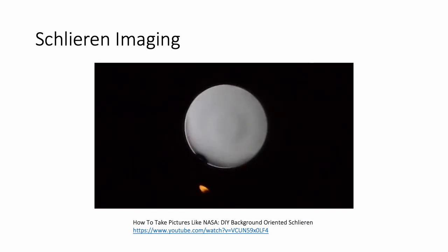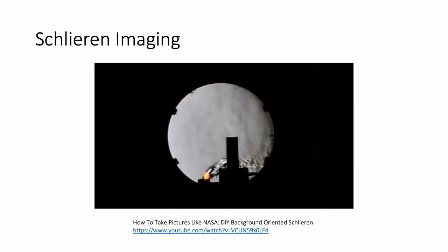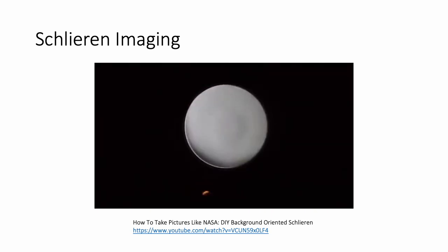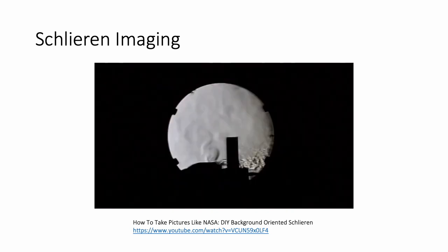Schlieren imaging is an imaging technique that measures the density changes in transparent media without any particle settings. It is utilized to visualize air convection, for example due to heat sources, jets, or airplanes, and is useful in fluid dynamics research to detect gas leakage.